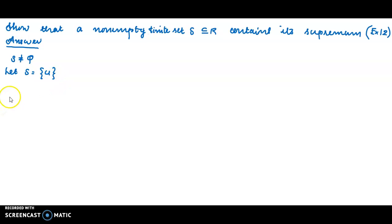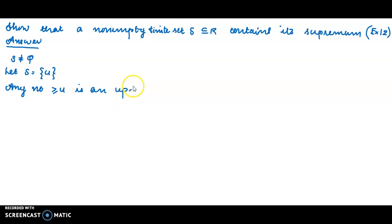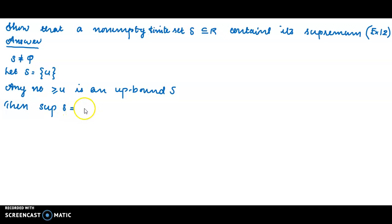Let S equal to singleton set {u}. Then any real number greater than or equal to u is an upper bound of S. So u itself is an upper bound of S, and the least upper bound — the supremum of S — equals u.